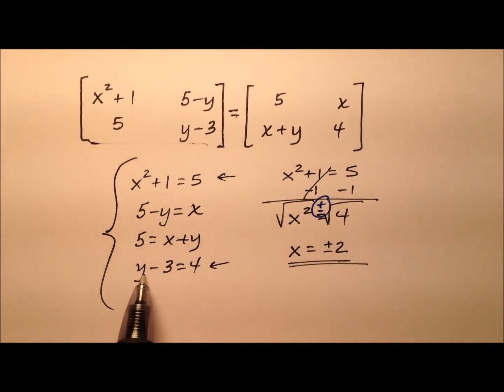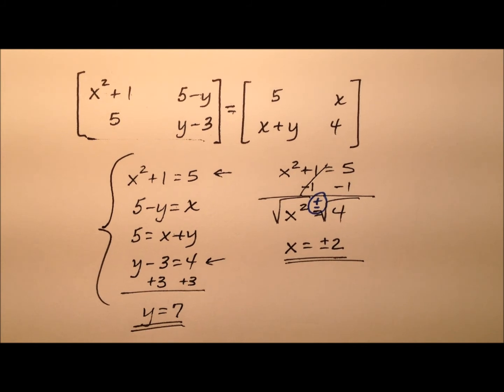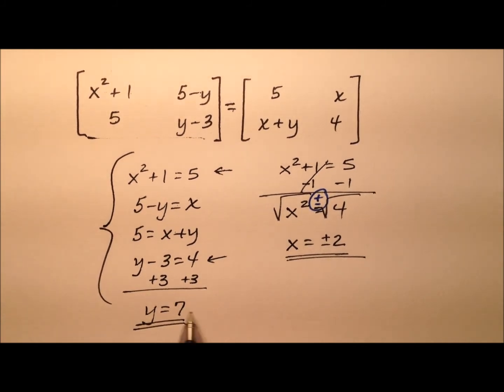Let's go ahead and solve this last one for y, since there are no x's in this one, just a y. We'll add three to both sides, and we see that y equals seven. So we know the value for y now.